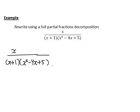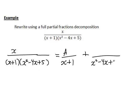You can verify using, for instance, the discriminant, that this cannot be factorised any further — that is indeed an irreducible quadratic. So therefore, the linear factor (x plus 1) will correspond to a partial fraction with constant A divided by (x plus 1), and the irreducible quadratic (x squared minus 4x plus 5) will have a linear function bx plus c on the numerator. Now we need to solve for a, b, and c.